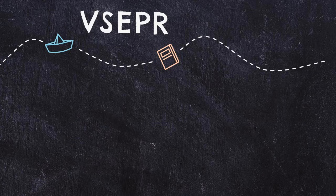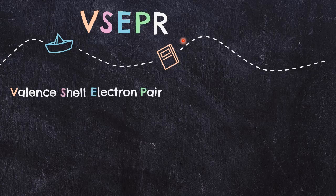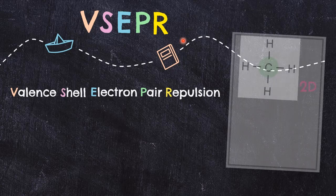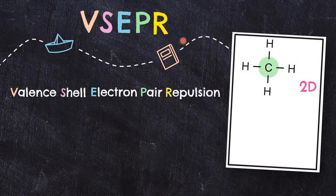A theory we can use to analyze molecular geometry is called VSEPR theory. VSEPR stands for Valence Shell Electron Pair Repulsion. VSEPR theory is a set of rules that we can use to look at a two-dimensional molecule and figure out what that molecule will look like in three dimensions.